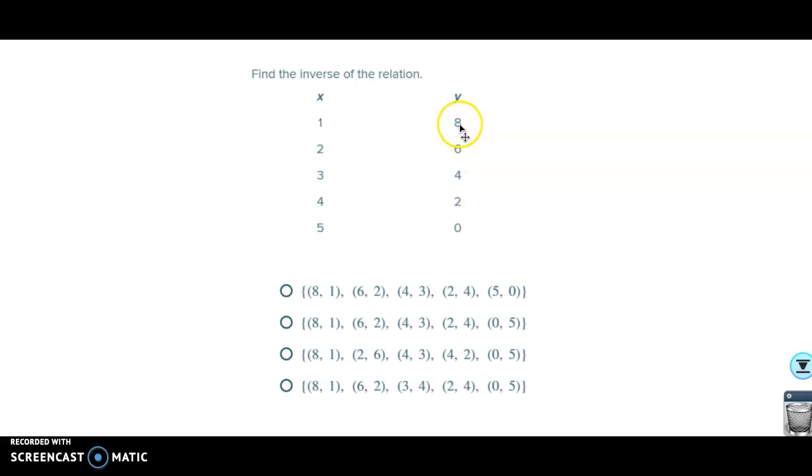You're looking for the answer that has the points 8,1, 6,2, 4,3, 2,4, and 0,5. I believe that B is the only correct answer here because each one of these points is reversed.